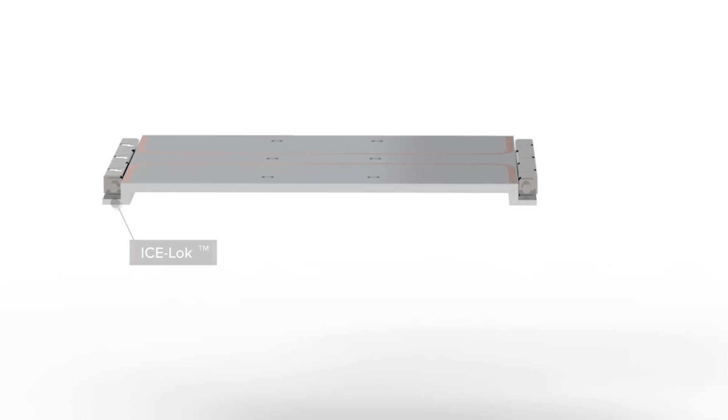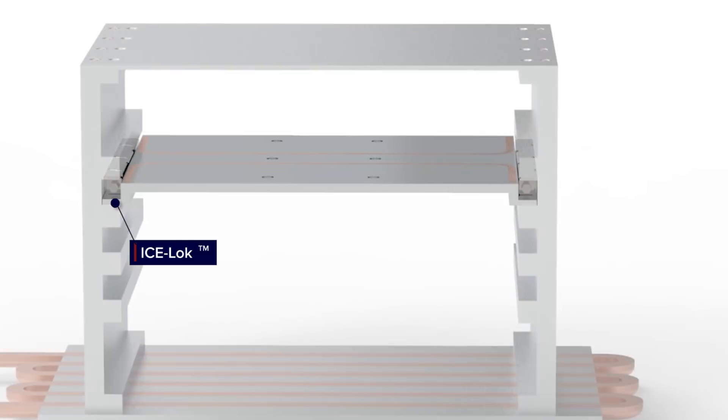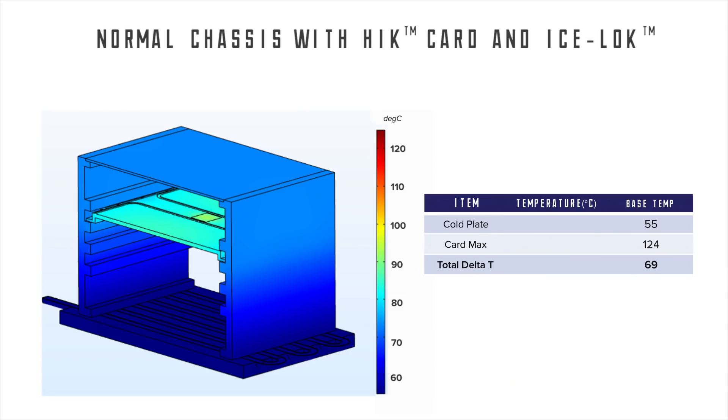ACT's ICE-Lok was designed to address both challenges. The design expands in all directions, contacting an additional surface on both the board frame and chassis. This provides more surface area while also bypassing metal-to-metal interfaces as the primary thermal path. By changing from an off-the-shelf wedge lock to the thermally superior ICE-Lok, the designer continues to reduce the overall delta T of the system.